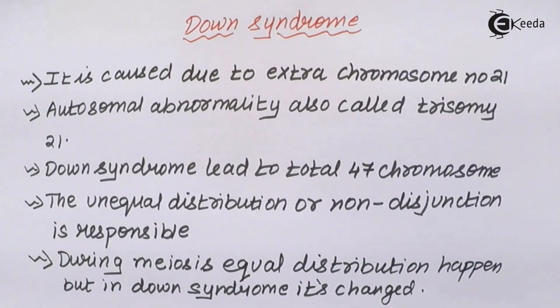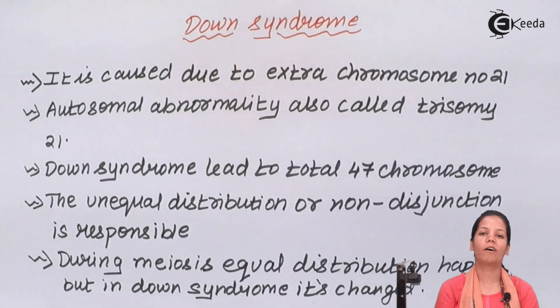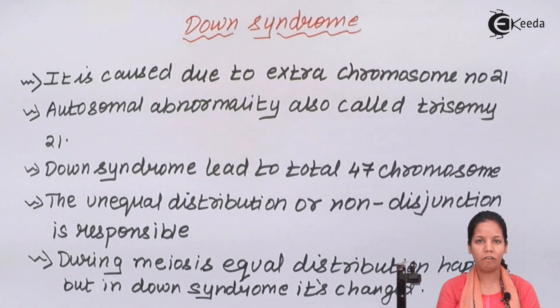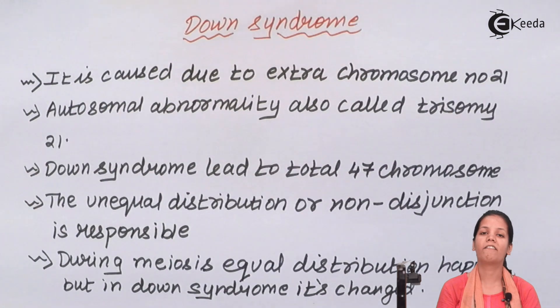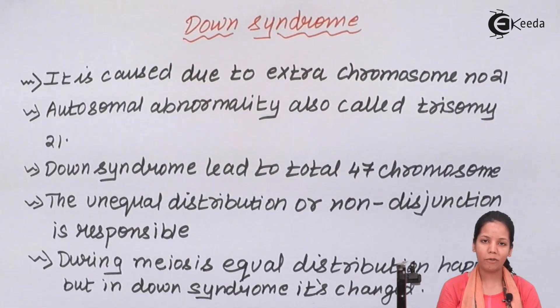So students, in this part of the chapter, what we came across was about Down syndrome and how Down syndrome occurs. I hope students are very clear with this concept. Thank you. That's it.